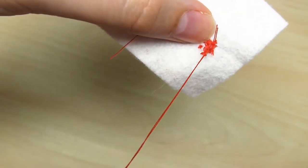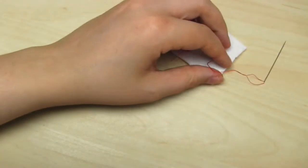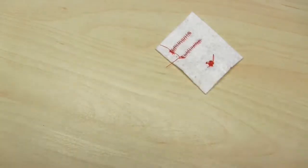Then all you need to do is cut off the excess thread. And that's it, you've now sewn on a button.